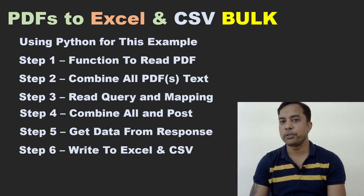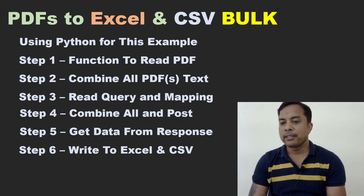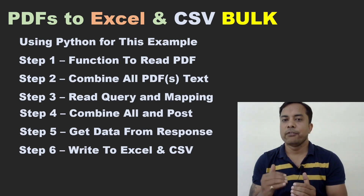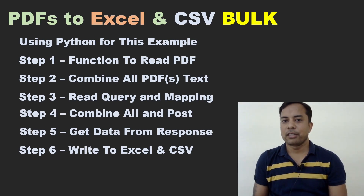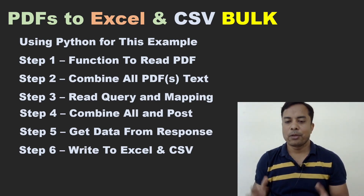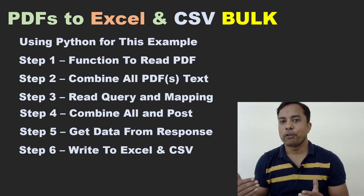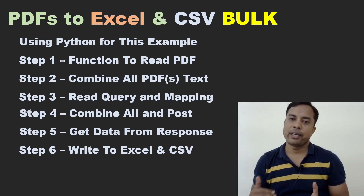Welcome back to another video on ChatGPT. We have done multiple videos on ChatGPT, so if you have not seen those, you can find the link to the ChatGPT playlist in the description. In the last video, we saw how to get text out of one PDF file, get the required information from it, and append that information line by line to an Excel file. Now in this example, we are going to take the next step: combine text from multiple PDFs and get the required information as a single Excel and CSV file.